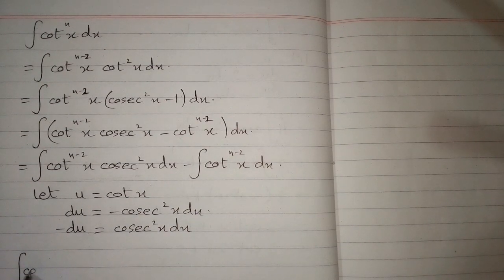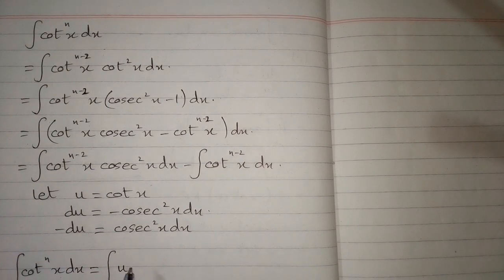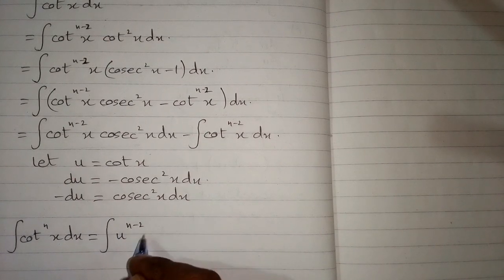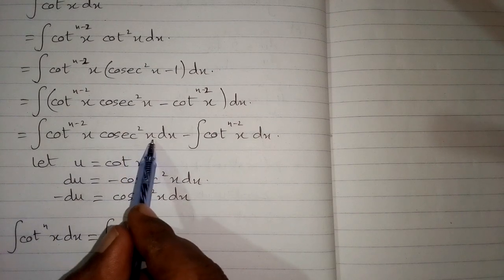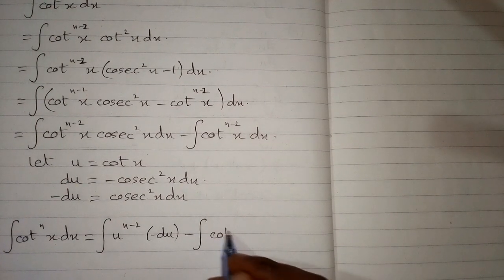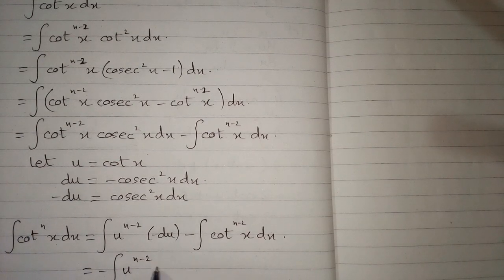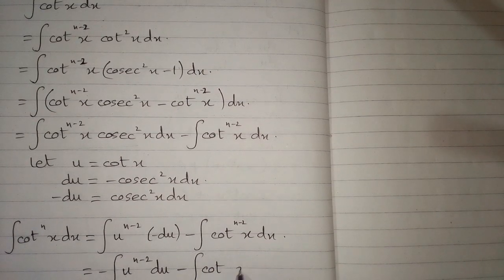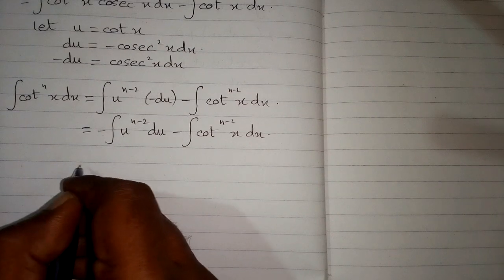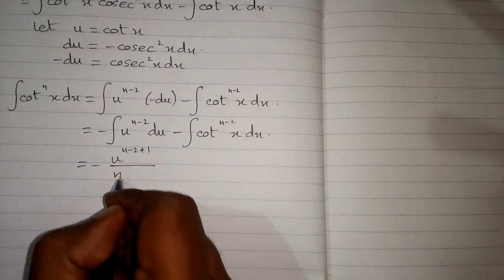So the integral of cot(x) to the power n dx equals the integral of cot(x) to the power n minus 2 times csc²(x) dx, minus the integral of cot(x) to the power n minus 2 dx. Substituting u for cot(x) and minus du for csc²(x) dx, and applying the power rule, we get minus u to the power n minus 2 plus 1, over n minus 2 plus 1.